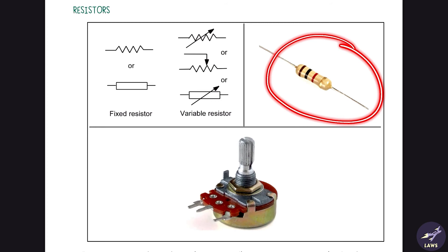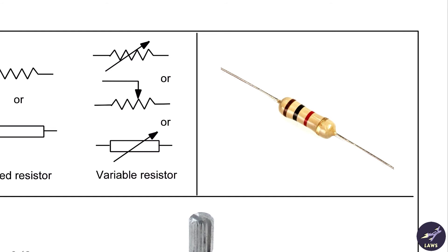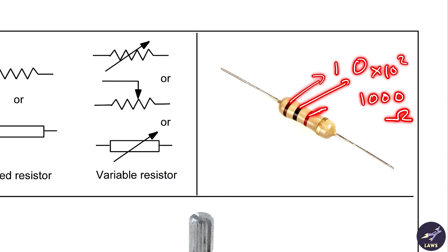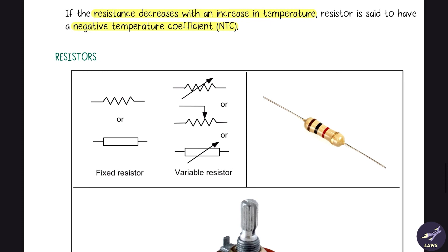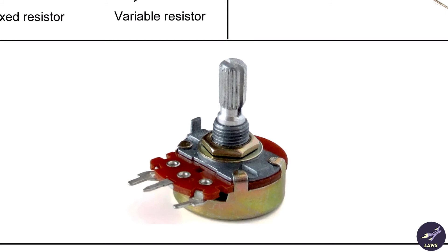This is a 1000-ohm resistor. There is a color code: by reading the color bands you can find the resistor's value. Brown means 1, black means 0, and the multiplier band here is 10², giving 1000 ohms. A variable resistor looks different and its resistance can be varied in the circuit — it is also known as a potentiometer.